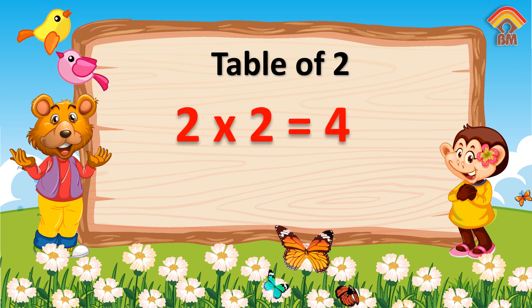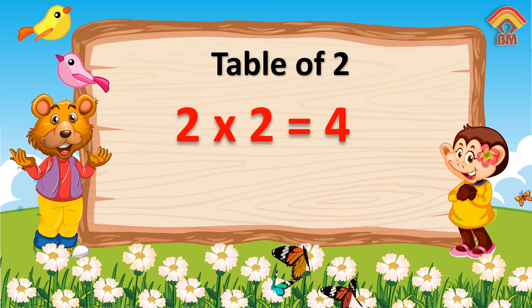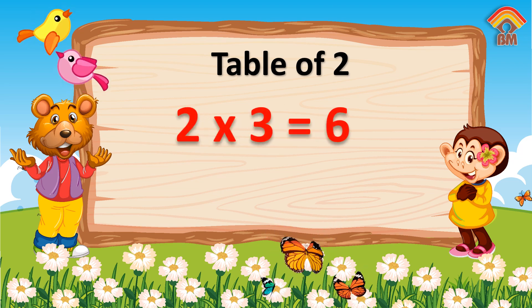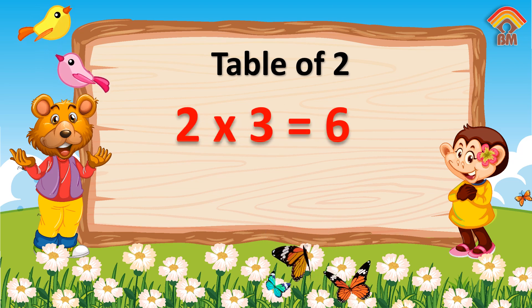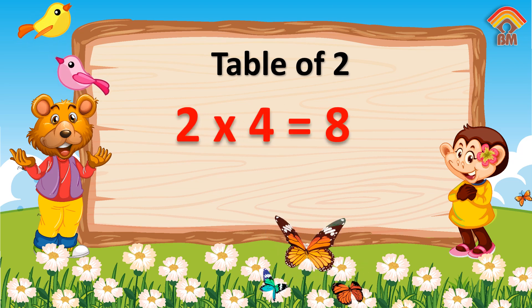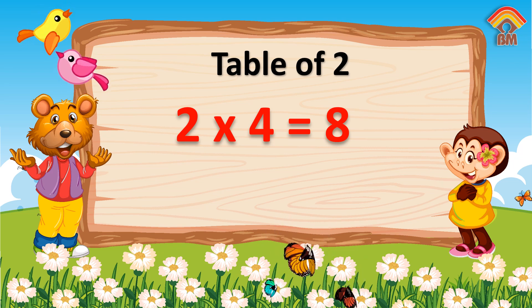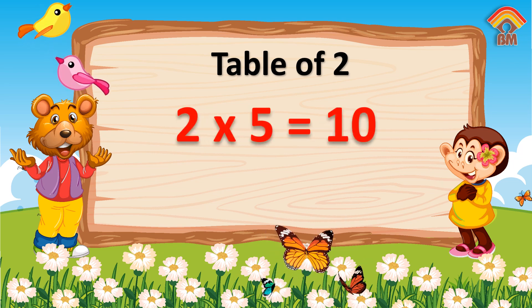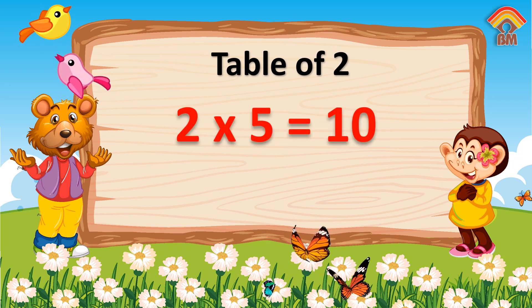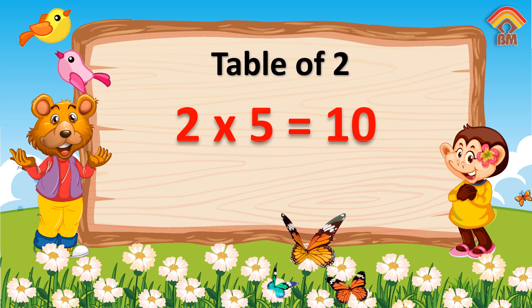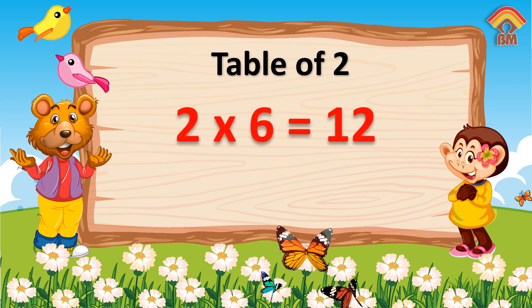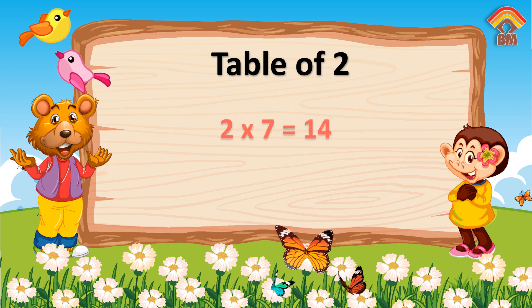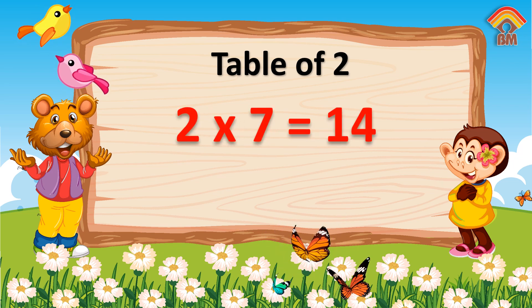Two twos are four. Two threes are six. Two fours are eight. Two fives are ten. Two sixes are twelve. Two sevens are fourteen.